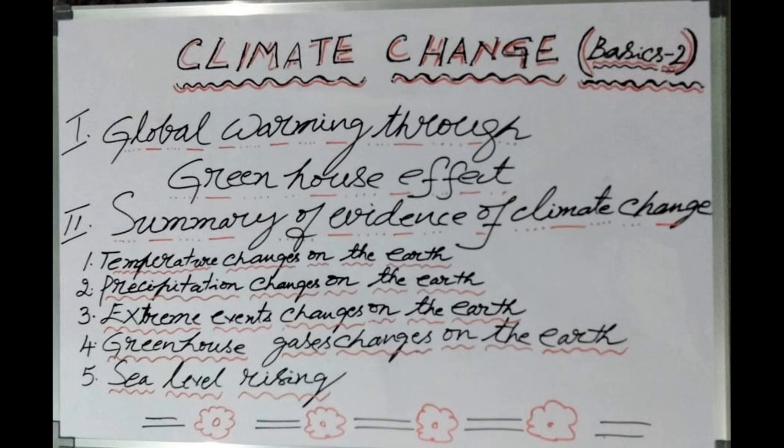This is Climate Change Basics 2. The first topic we are understanding is global warming through greenhouse effects. Going back to Basics 1, I covered greenhouse effect and global warming under global processes and causes of climate change. Here I am giving a detailed explanation for global warming through greenhouse effect.